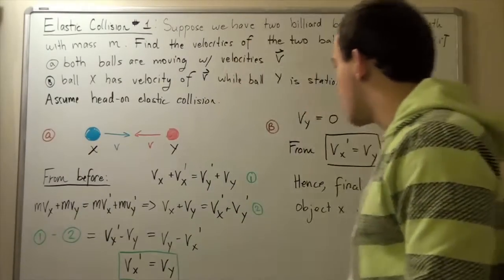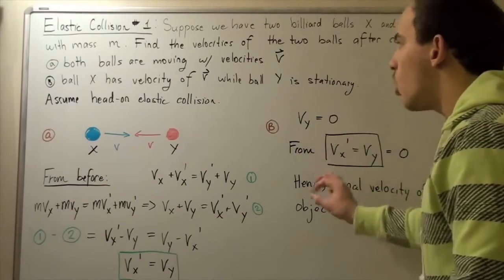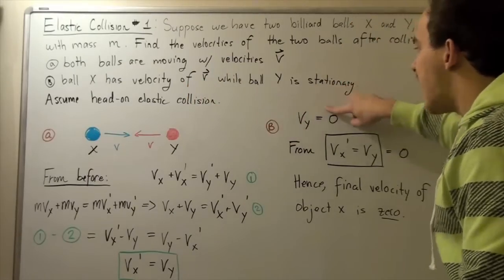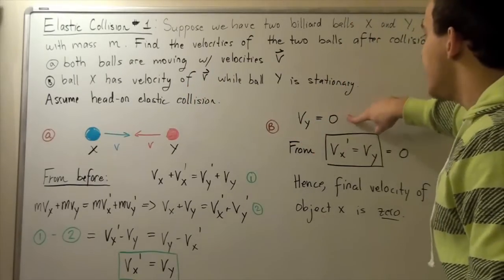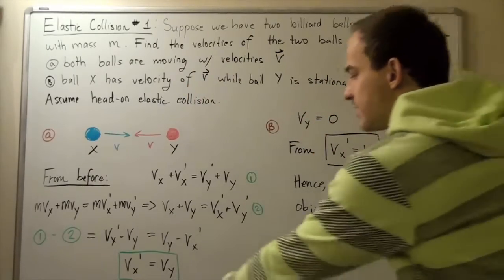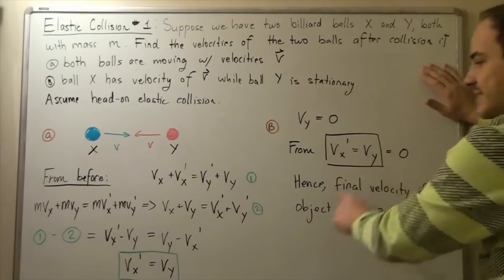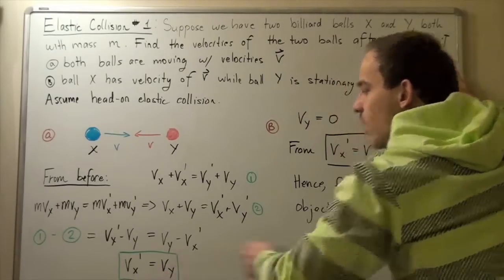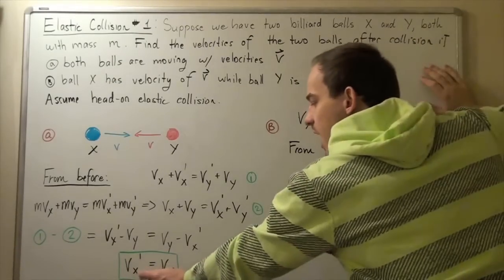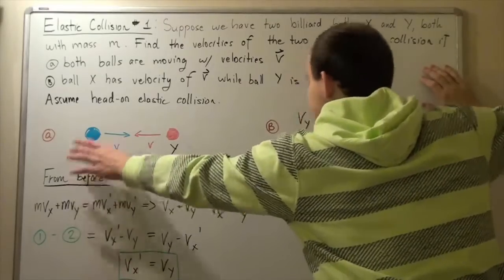Once again, we can apply this equation. We are given that the velocity of vy is zero. That means from this equation, since this term is zero, the final velocity of ball X is zero.